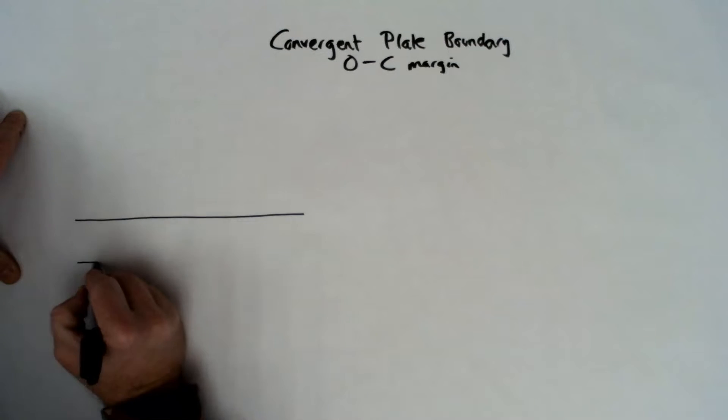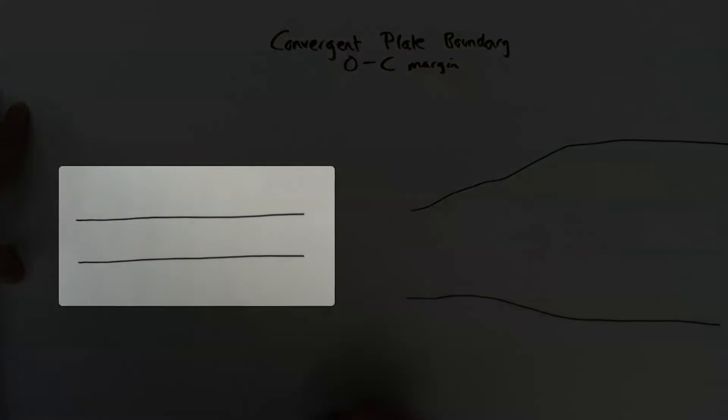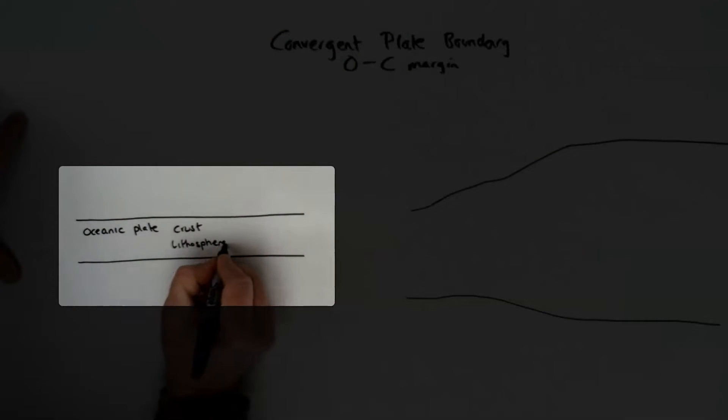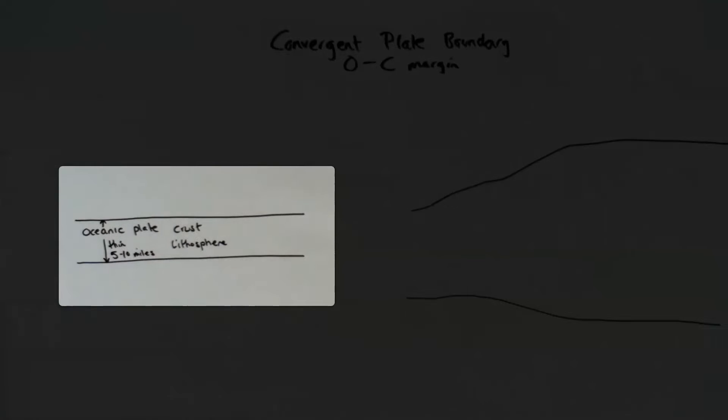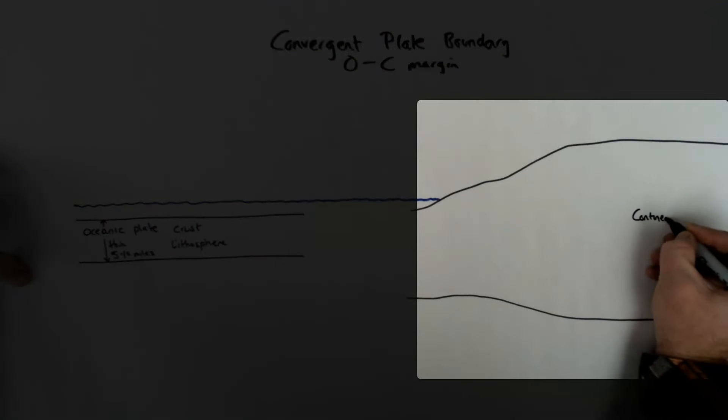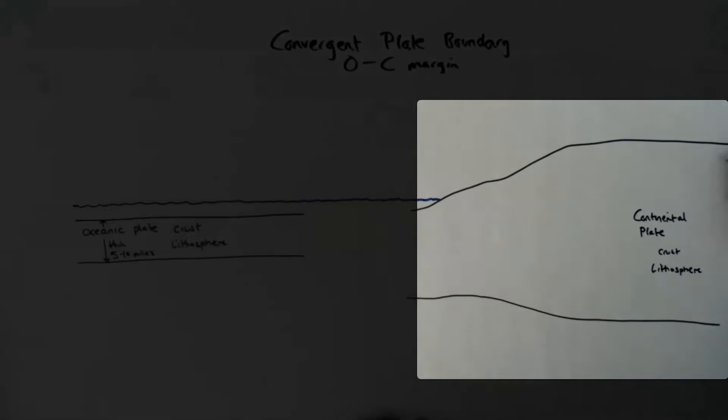This diagram is in the plate tectonics unit. I'm looking at today the convergent plate boundary which is oceanic converging with the continental. Now these plates are different and they differ in the thickness, composition and density, and this creates certain processes and features that occur at this boundary. So the ocean plate is thinner, made of the crust and lithosphere, and the continental plate is thicker, again made of crust and lithosphere.